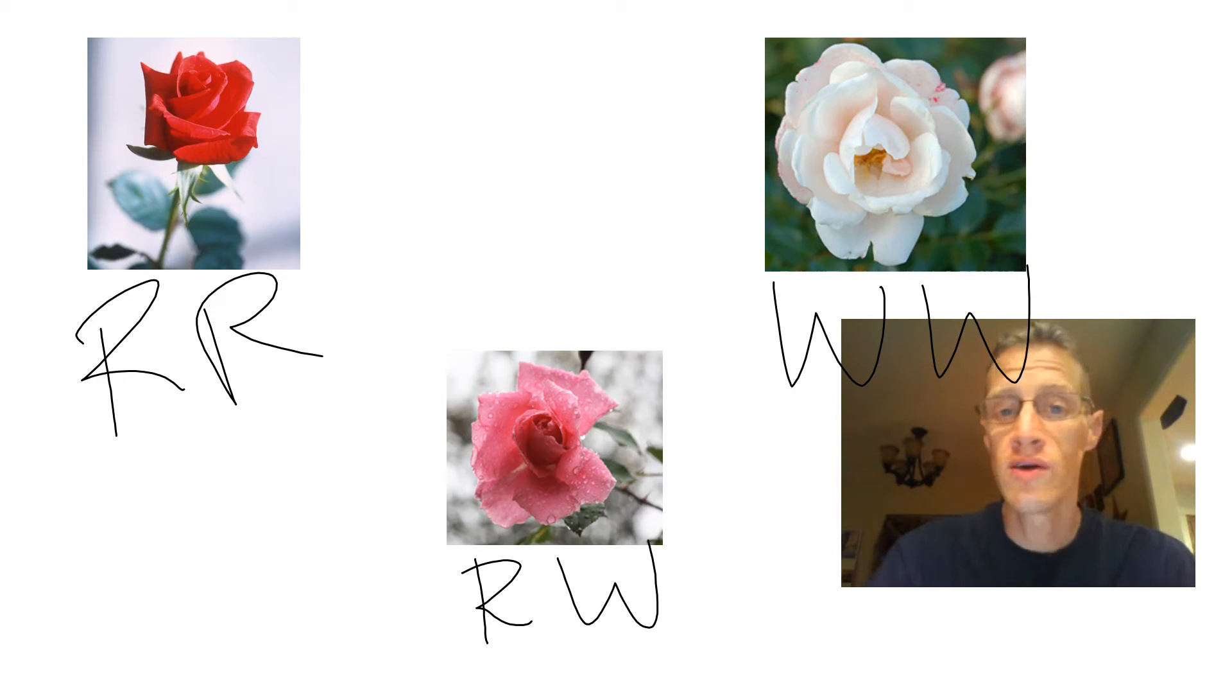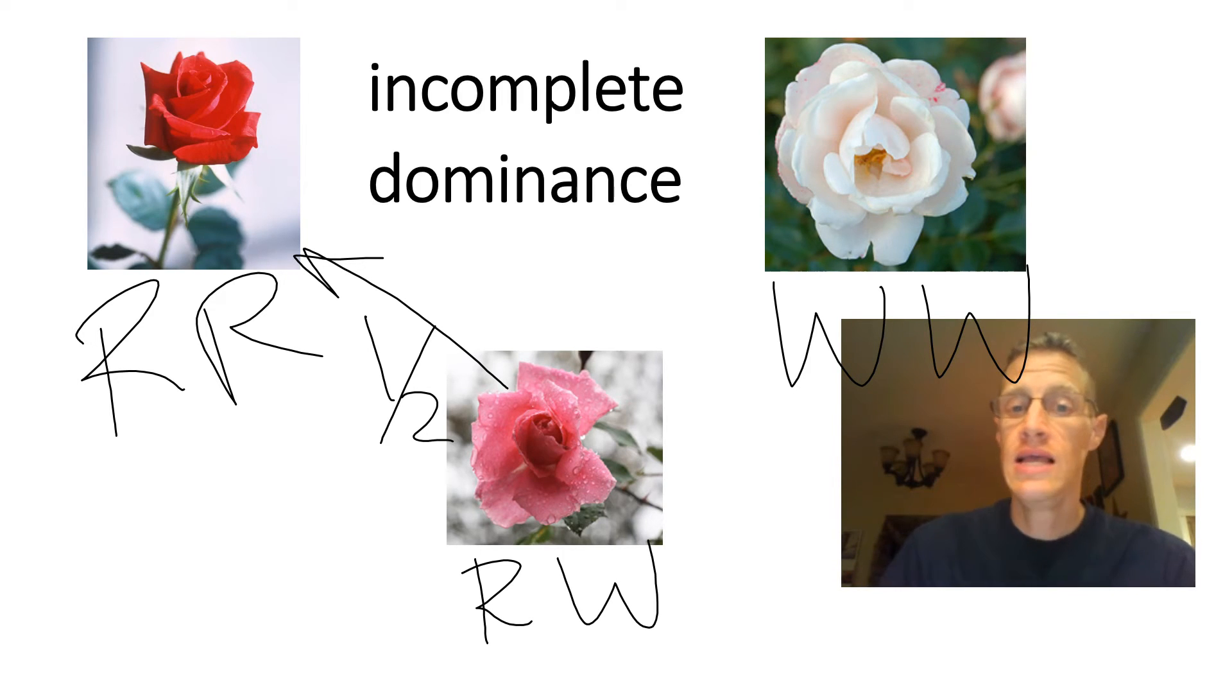What the offspring get is a copy of each. One allele for red and one allele for white. And the reason that they have pink is they only produce about half the amount of pigment as this red parent. Because the red parent has two copies of the gene instead of one, they make about twice the amount of red and thus show up darker. And this pattern of inheritance has been called incomplete dominance because neither allele is completely dominant over the other. The offspring are sort of an in-between phenotype.